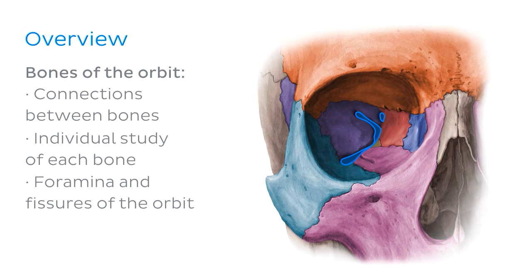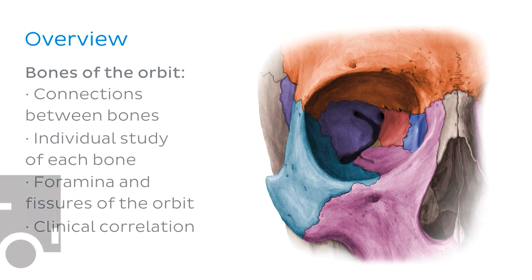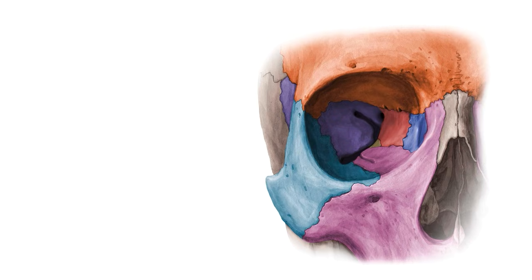We'll also be looking at openings or passages in the bony orbit known as foramina and fissures, which allow for passage of nerves and blood vessels. Finally, I'm going to finish up by taking our knowledge of the bony orbit to look at its anatomy from a more clinical perspective.